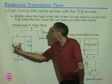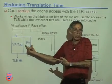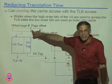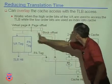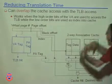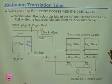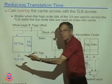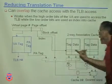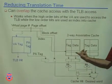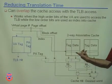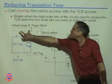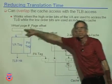If it's a TLB hit, we get the physical address. Meanwhile, we're trying to find the cache block and have a hit. But we also need the physical address to match the tag in the cache.